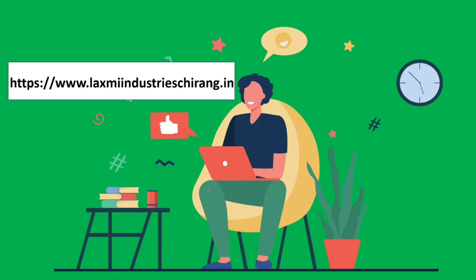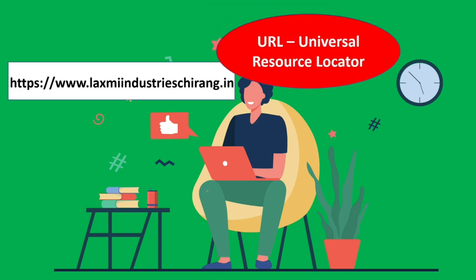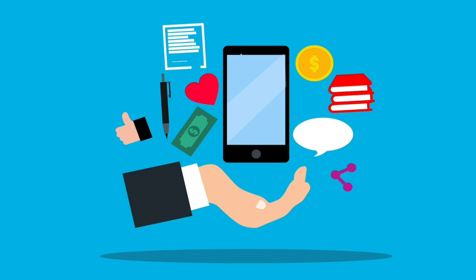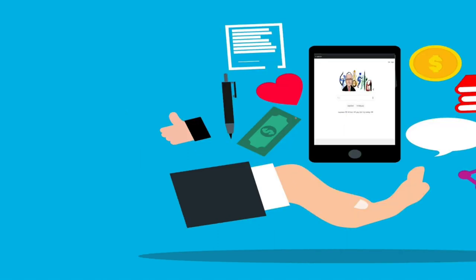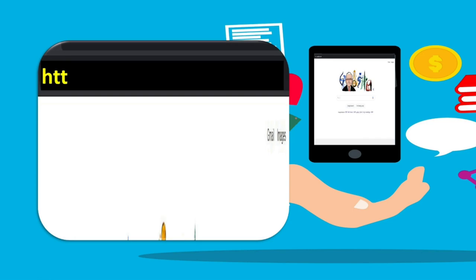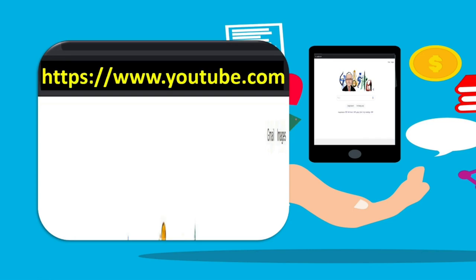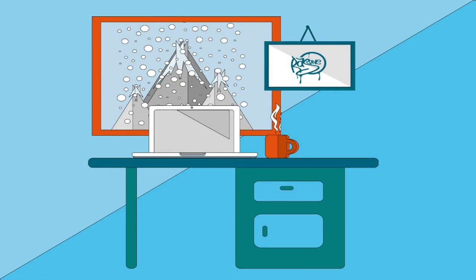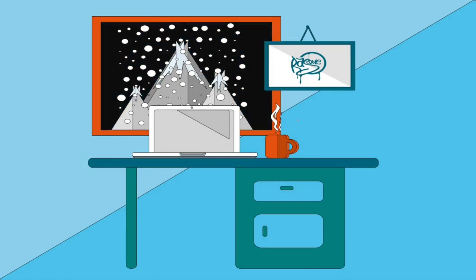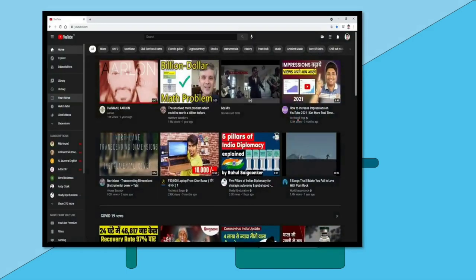The browser will be linked to a URL. The URL is called Universal Resource Locator. If you have a cell phone, you can find a link like https://www.youtube.com. If you enter this link, you can be sent to youtube.com.